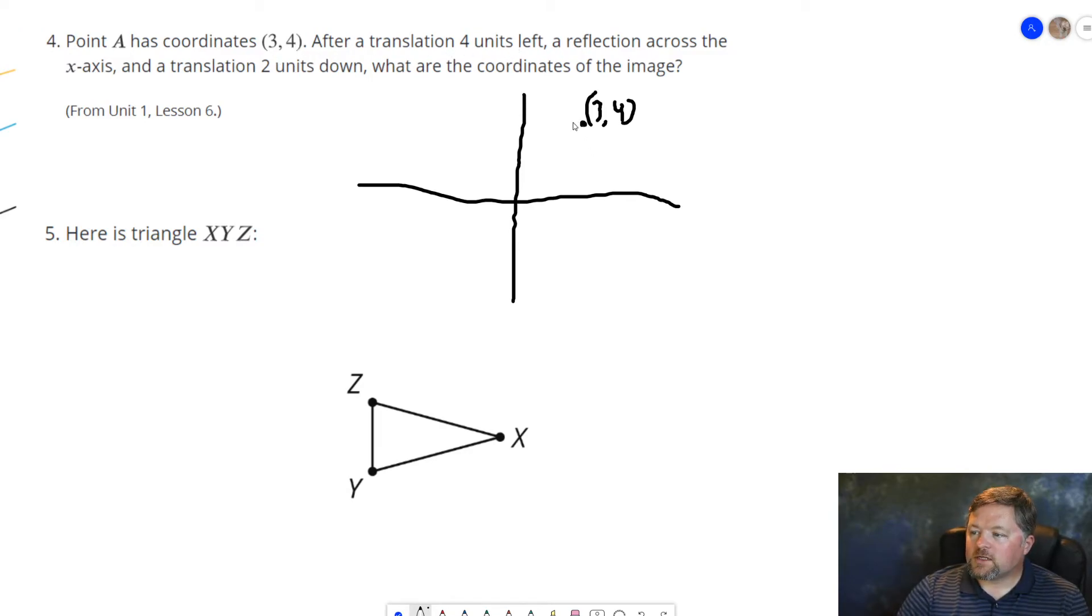Translation 4 units left. Well, 4 units left is going to put it here, so it's going to be 4 units left, that's going to be right there. Negative 1, 4. Reflection across the x-axis. This is the x-axis. Negative 1, 4 is going to reflect across the x-axis, be down here at negative 1, negative 4.